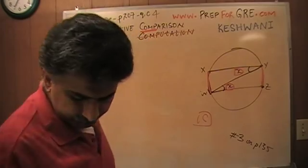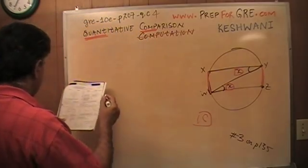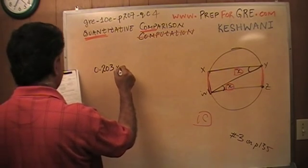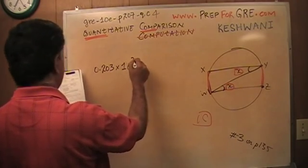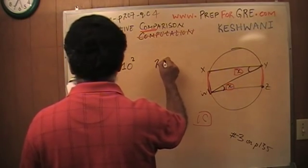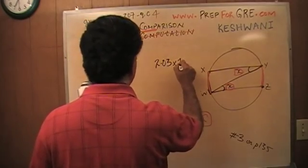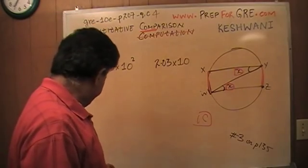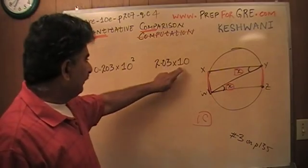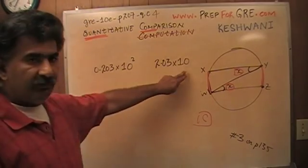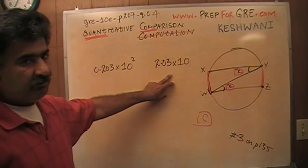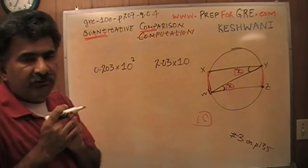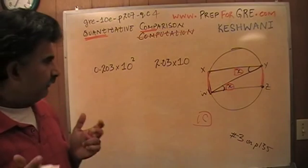Question number 4. Number 4 says 0.203 times 10 raised to 2nd power and 2.03 raised to 10th. Well, the very first thing I am going to do is 10 appears on both sides. This is a multiple of 10. This is a multiple of 10. I am going to divide. I am not going to say both sides of the equation because it is not an equation. But if the same quantity appears in both the columns, that quantity plays no role.